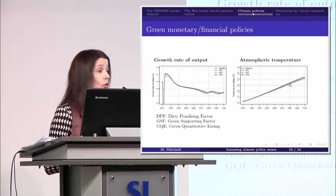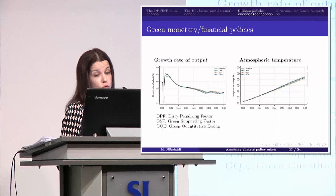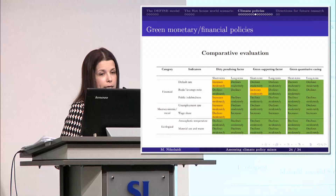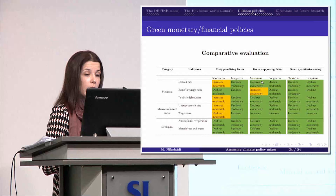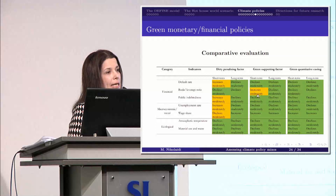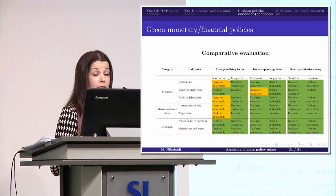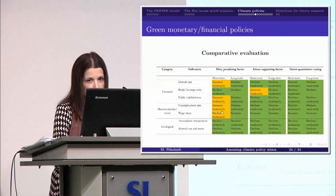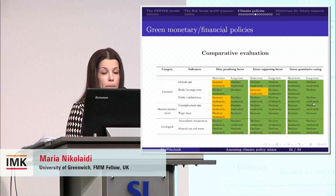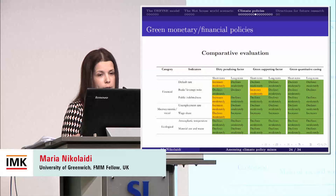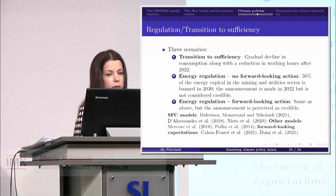There is a decline in atmospheric temperature, but obviously these individual monetary and financial policies cannot reach the 1.5 and 2 degrees Celsius targets. When we look at the green supporting factor, we see an increase in the leverage ratio of banks, which means banks might experience an increase in their financial fragility because they hold less capital. With the dirty penalizing factor, we don't have that, but we have other problems — not only linked with a higher default rate, but also an increase in unemployment. With green quantitative easing, generally there are not so many problems. But in all cases, atmospheric temperature changes only moderately — so using only monetary and financial policies will not be enough to reach the Paris Agreement targets.